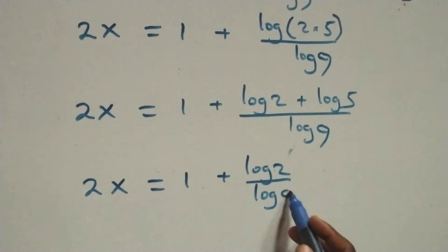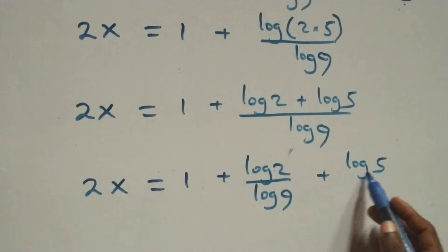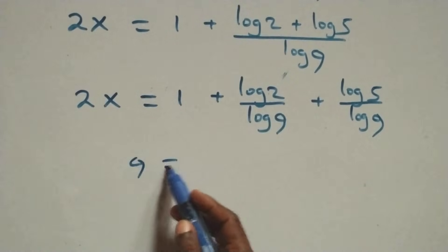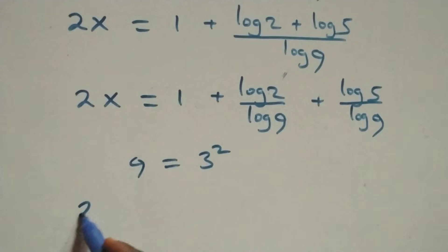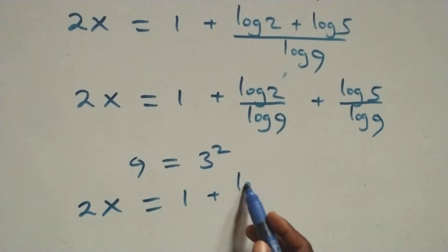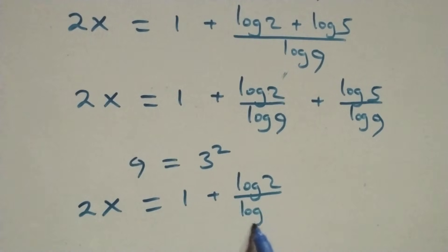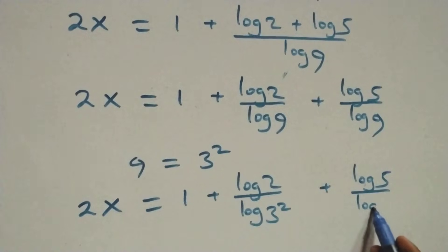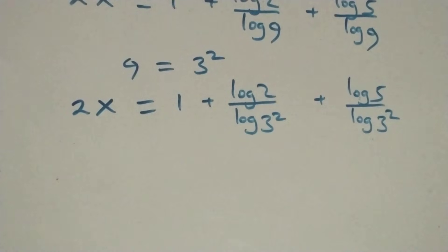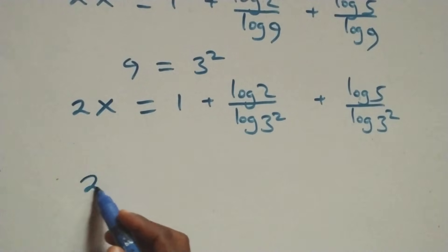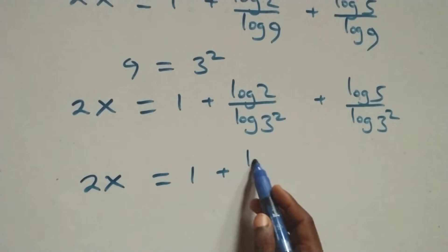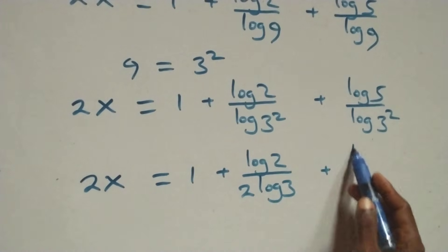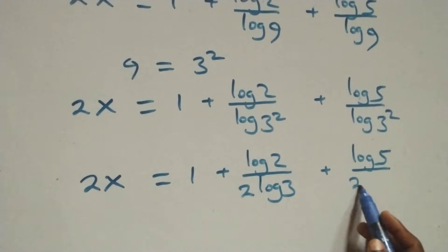We separate this into two fractions. We can also express 9 as 3 times 3, which is 3 squared. So we have 2x equals 1 plus log 2 over log 3 squared, plus log 5 over log 3 squared. Applying the power rule of logarithms, the exponent 2 comes down. This becomes 2x equals 1 plus log 2 over 2 log 3, plus log 5 over 2 log 3.